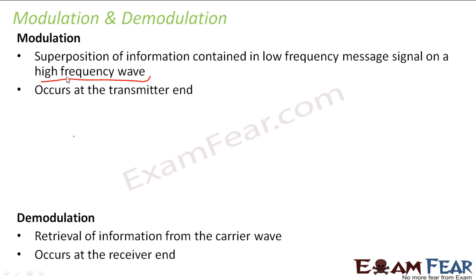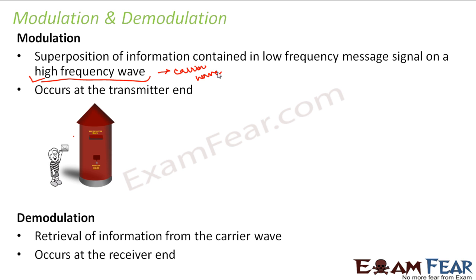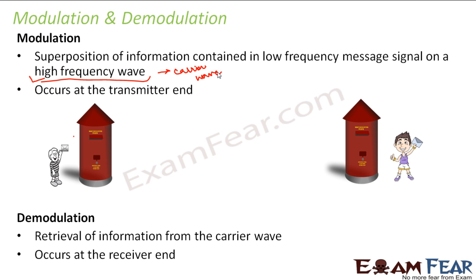A carrier wave is nothing but a high frequency wave that carries the message signal. In our example, the letter is the message signal placed into the post office in Delhi. The rails are the channel, but rails alone don't serve the purpose — you need a high frequency wave, the train, which acts as the carrier wave. Modulation happens at the transmitter end, and once it reaches the receiver end, the receiver takes the letter from the train — that is demodulation.